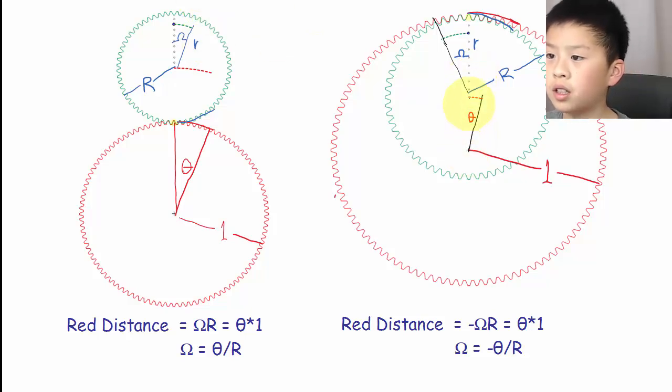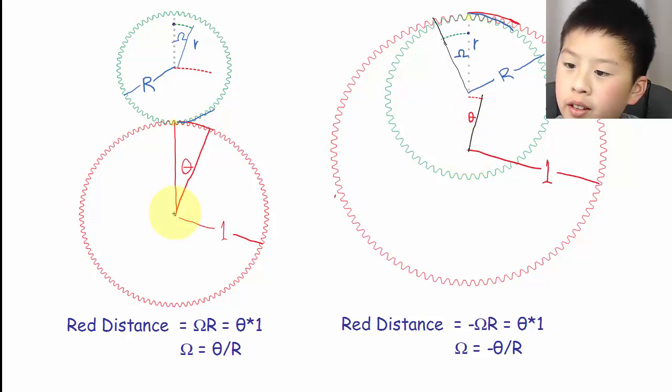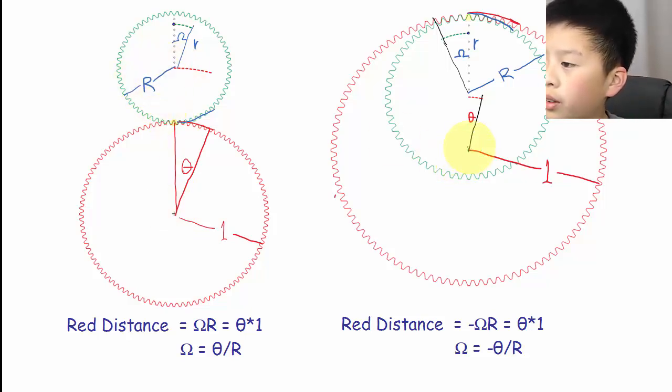So here from here to here will be cosine of theta and from here to here will be sine of theta. Similar for this, from here to here will be cosine of omega and from here to here will be sine of omega. Another thing here is that for this one the distance from the center of the main gear to the center of the disc, the radius is 1 so 1 plus capital R. And for the other one where the disc is inside the main gear it would be 1 minus capital R.